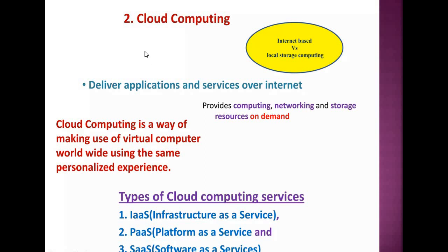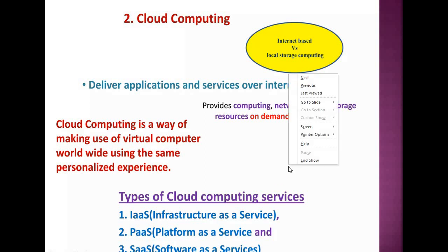Another technology enabled by IoT is cloud computing. Cloud computing is used for storage purposes. Local storage computing can be used as virtual storage computing to deliver application services over the Internet. It provides computing, networking, and storage resources on demand. Types of cloud computing services are: Infrastructure as a Service, Platform as a Service, and Software as a Service.